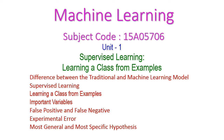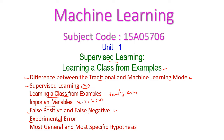Hello friends, welcome to today's machine learning class. In this class we will start supervised learning. The first topic is learning a class from examples. Under this we will see the difference between traditional and machine learning models, what is supervised learning, learning a class from samples using the family car example, important variables x, r and hypothesis H(x), false positive, false negative, experimental errors, empirical error, and most general and most specific hypothesis.